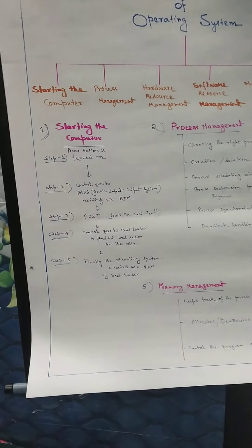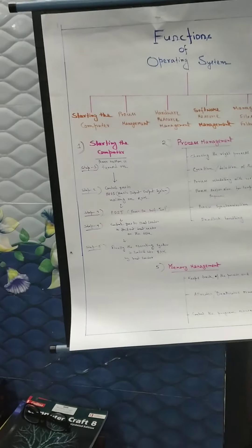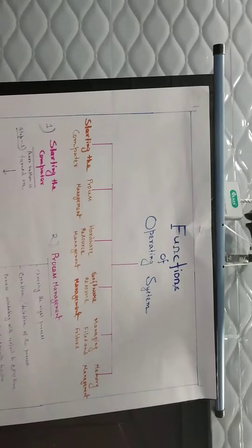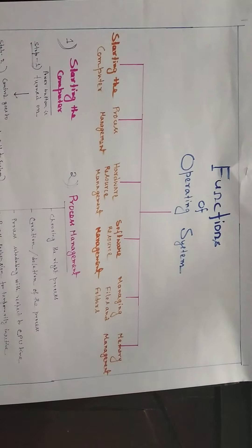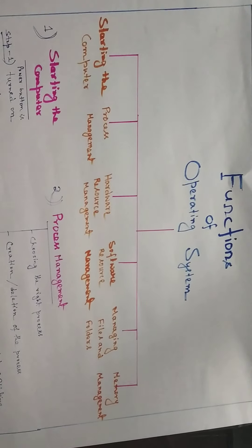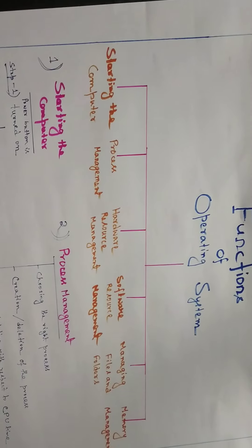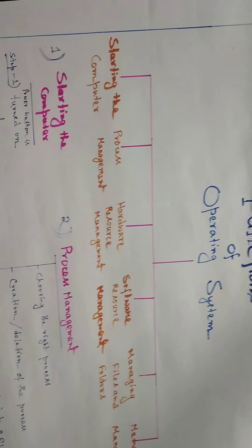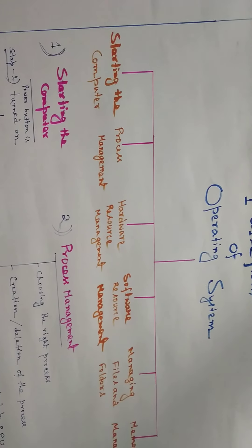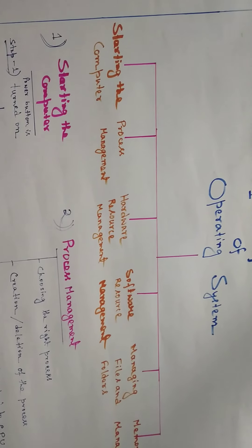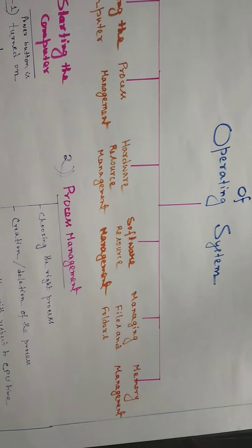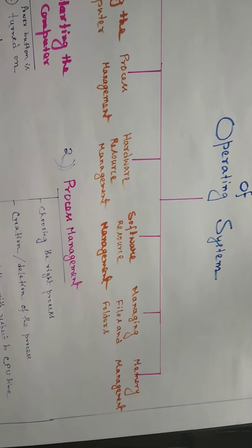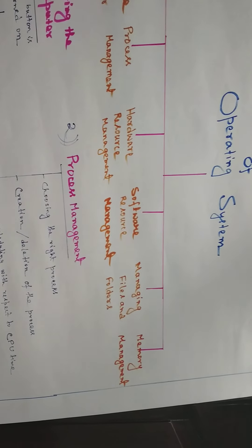So I am discussing it again. First, look at the functions of operating system. There are six functions given in your textbook: starting the computer, process management, hardware resource management, software resource management, managing files and folders, and memory management.